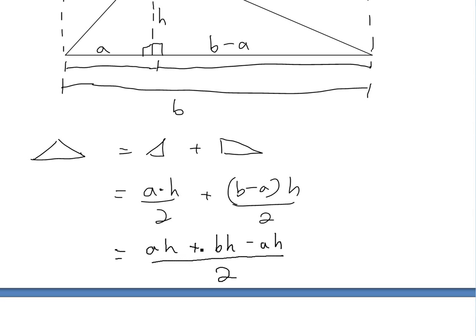So we have this over here, a h and minus a h cancel. So we're going to be left with just b h over two.